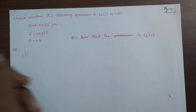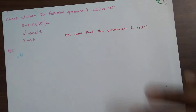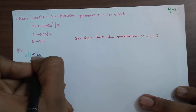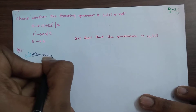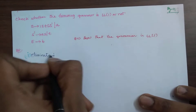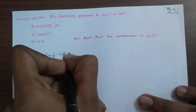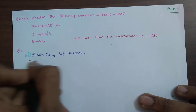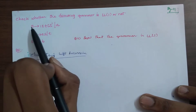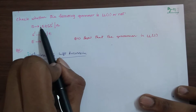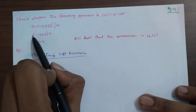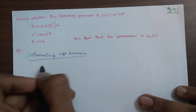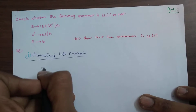First, eliminate left recursion. The grammar has left recursion. S is left recursive, and E is also left recursive — so left recursion is nil (not present after elimination).